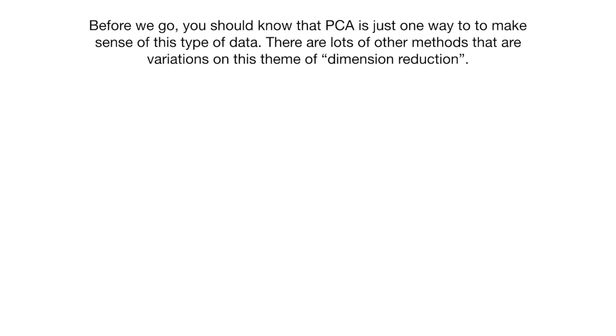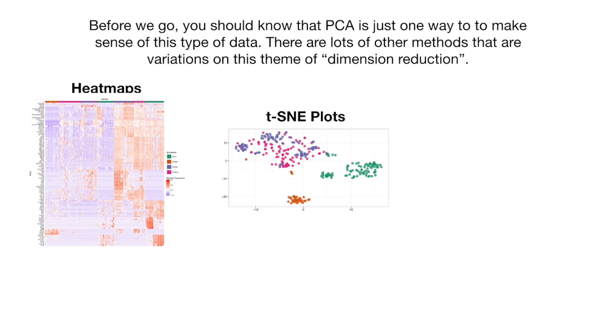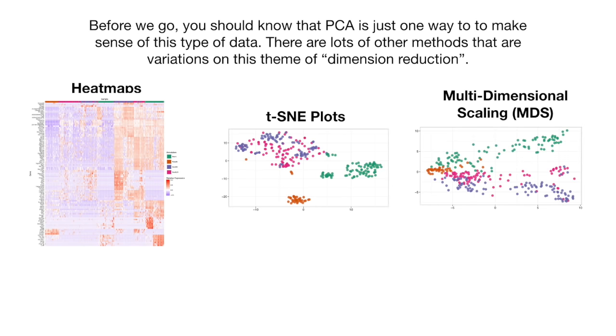Before we go, you should know that PCA is just one way to make sense of this type of data. There are lots of other methods that are variations on this theme of dimension reduction. These methods include heat maps, T-SNE plots, and multiple dimension scaling plots. The good news is that I've got stat quests for all of these, so you can check those out if you want to learn more.